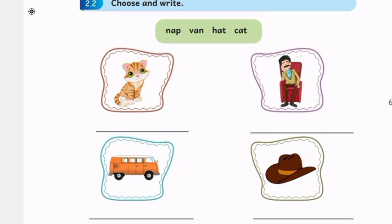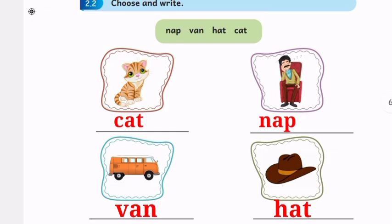See the first picture. What is this? Cat. Write c-a-t, cat. Next: nap, n-a-p, nap. See the next picture: van, v-a-n, van. The last one is hat, h-a-t, hat.